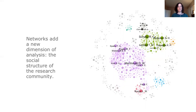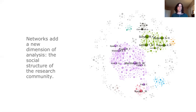Network analysis, simply put, is a set of techniques that can be used to understand social structure and to visualize and analyze relationships among actors or objects. When we talk about network analysis in terms of research studies — sometimes also called science mapping — we're usually referring to one of several relationships upon which these networks are structured.